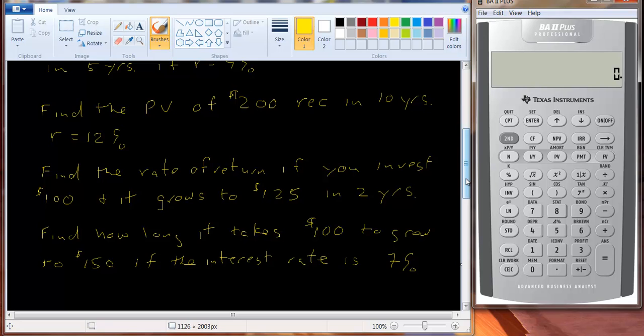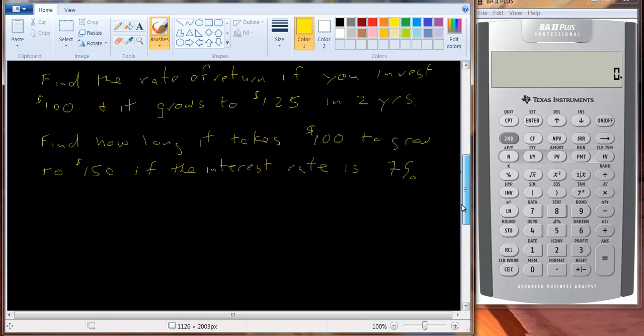Let me show you one more set of functions that you'll be using on the calculator. And up here there's a key, right next to the second key, there's a key that says CF. It stands for cash flow. It's a cash flow worksheet. So we can put a stream of numbers in. We can put a number in for time period zero. We can put in a cash flow in year one. Let me just put in a number here, I'll put in 50.